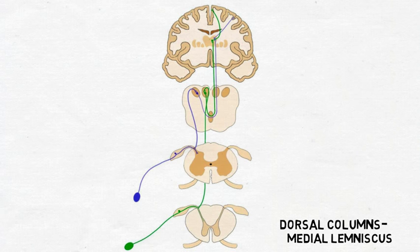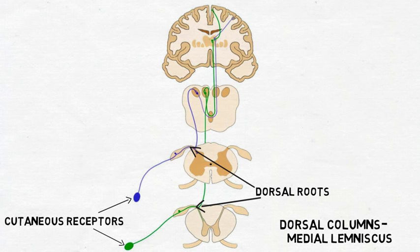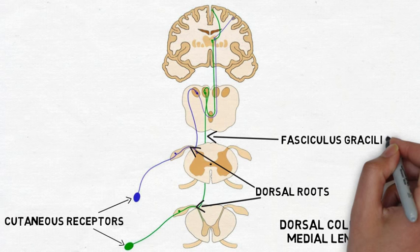Fibers in the dorsal column medial lemniscus leave cutaneous receptors or proprioceptors and enter the spinal cord via the dorsal roots. They travel up the spinal cord to the medulla in one of two fiber bundles within the dorsal columns: the fasciculus gracilis, which carries information from the lower half of the body, or the fasciculus cuneatus, which carries information from the upper limbs and torso.